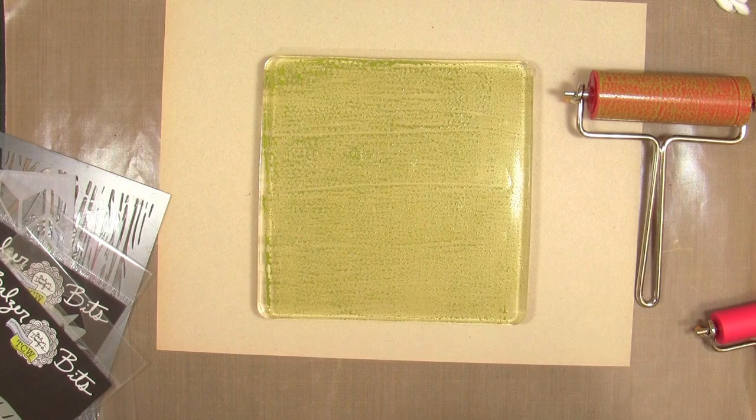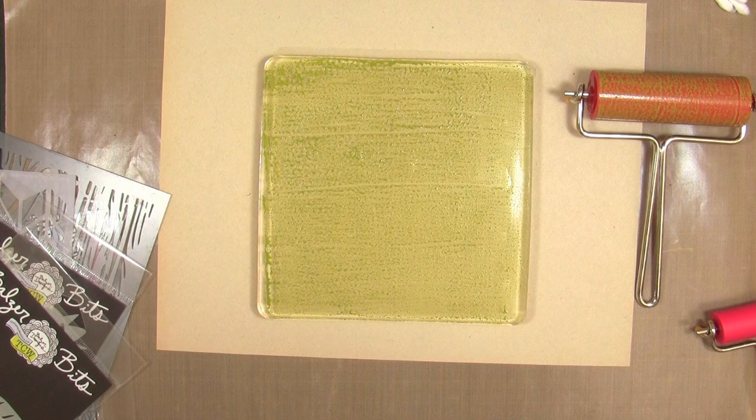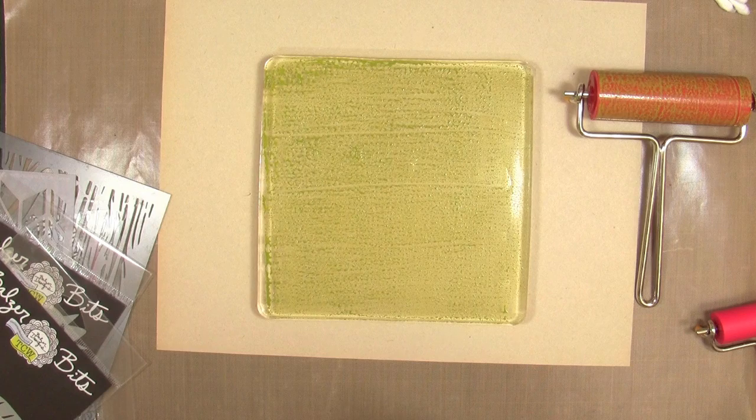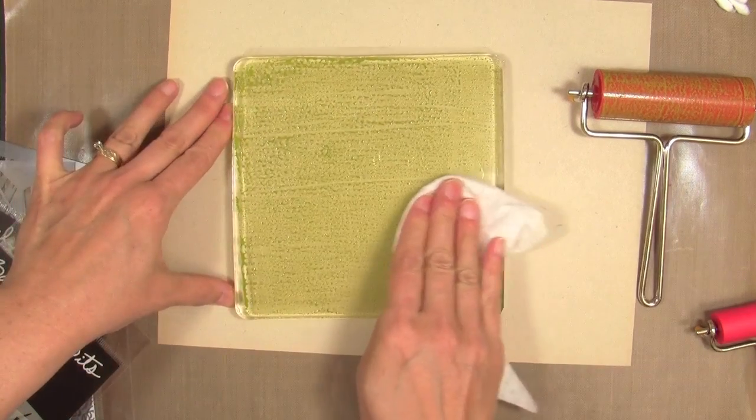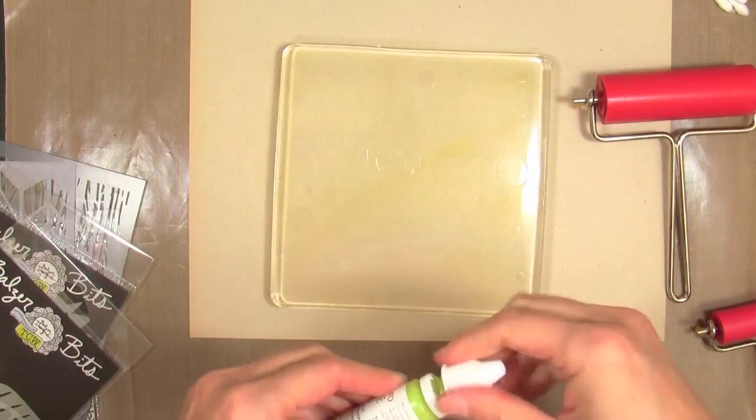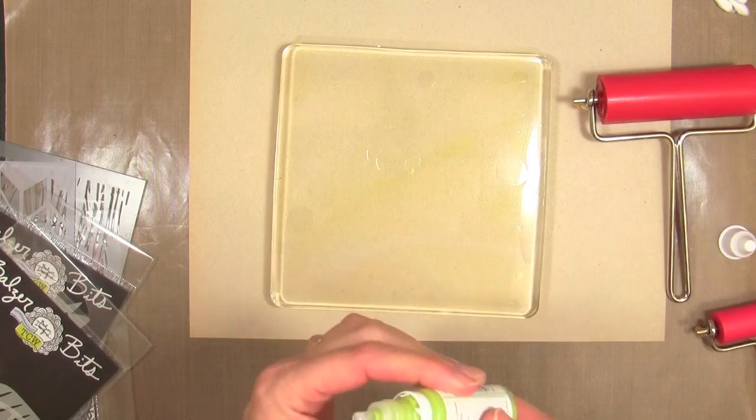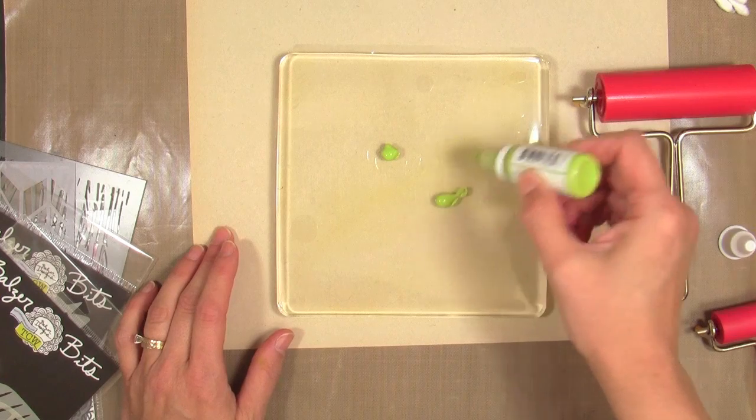That doesn't mean it wouldn't be a cool effect on your paper, but I personally wasn't going for this look. So I decided to just wipe it clean with a baby wipe. You can clean off your jelly plate completely by using some hand sanitizer or water and a paper towel. In the end, I started using hand sanitizer and a paper towel and found that worked really well.